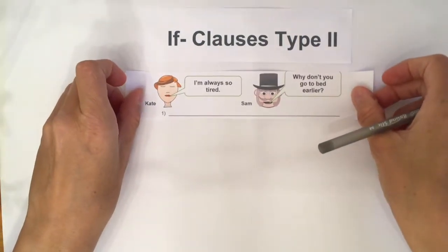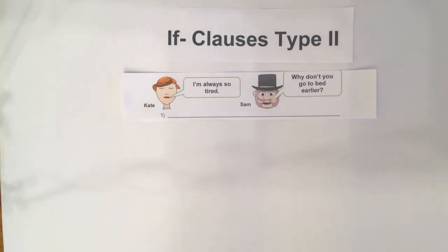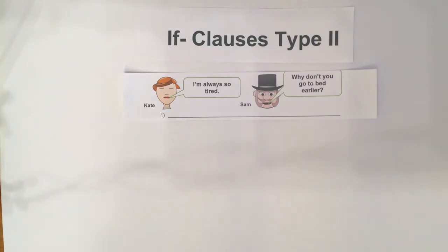Here you can see Kate and Sam. Kate has got a problem — she's always tired — and Sam has got a solution for her. If Kate went to bed earlier, she wouldn't be so tired.